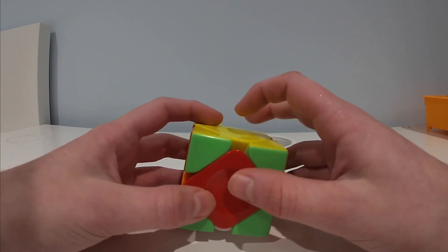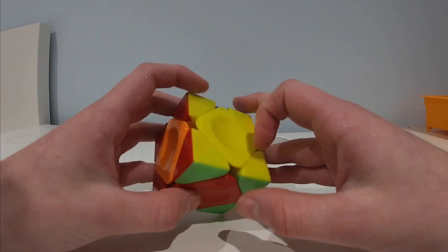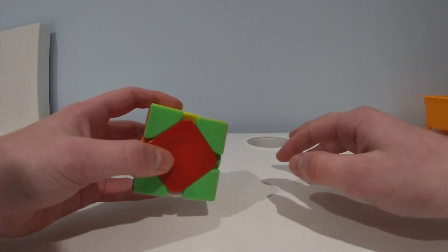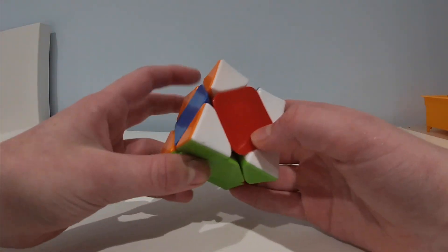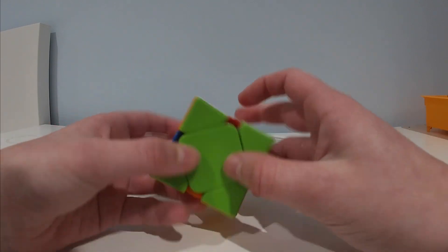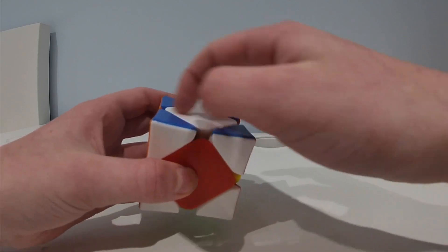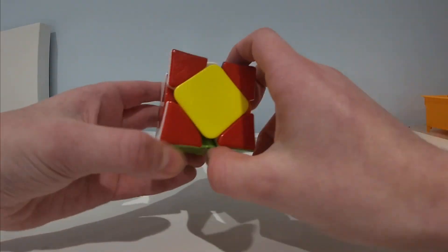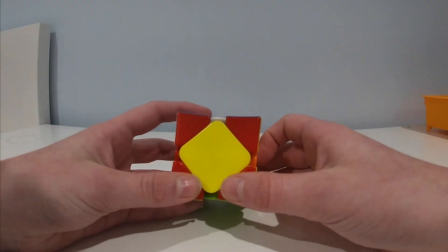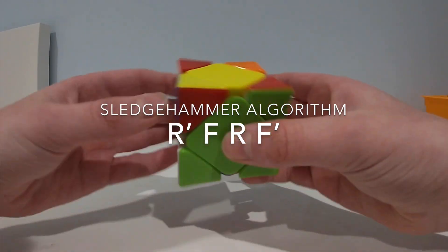The next thing you've got to do is you want to put the opposite center on top. There are two cases of this. One is where it's solved. You don't have to do anything then. Or you've got this where it's not. What you do then is you find what the opposite center is. So in this case, blue. You can see by the corners. Whatever the color of the corners are. And you put that center in the back. And you do the same algorithm as before. R prime, F, R, F prime.